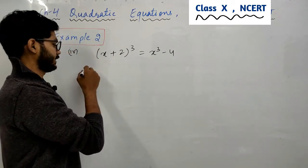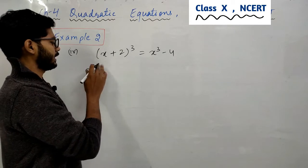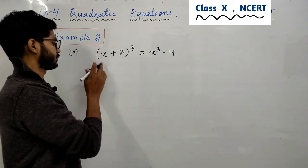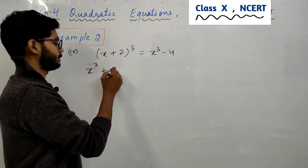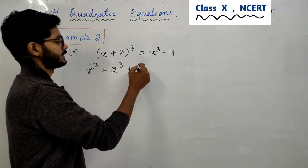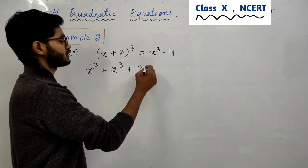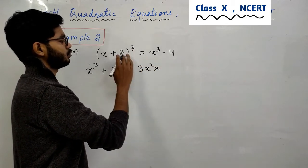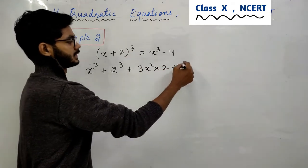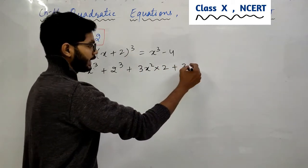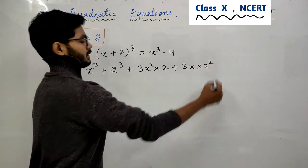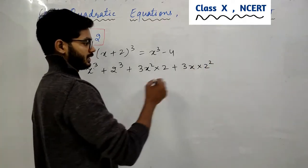A plus b whole cube के identity apply हो सकती है. Identity इस नहीं पता फिर तो भाई दिक्कत होने वाली है. क्या होती है a³ + b³ + 3a²b + 3ab².